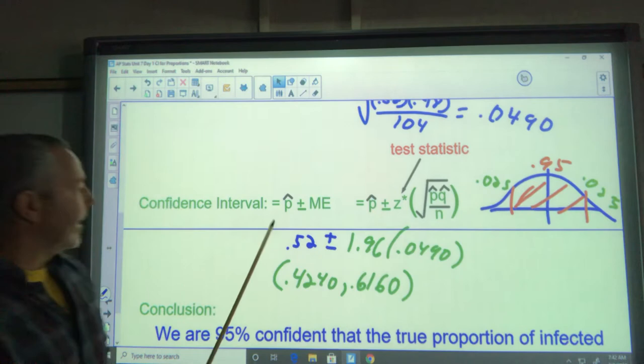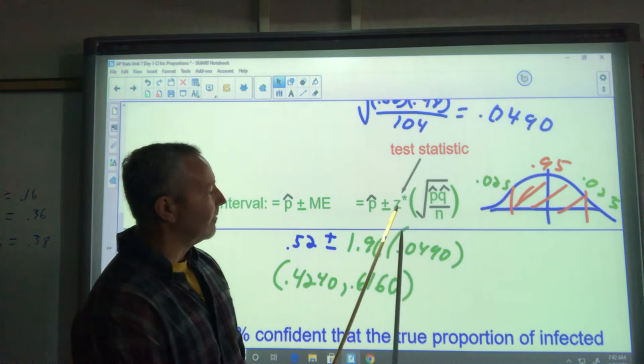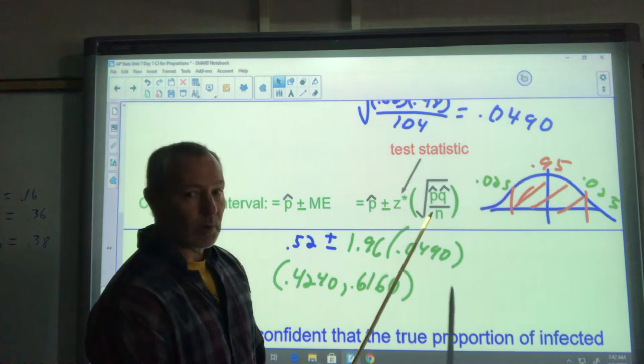We're going to come down and do our confidence interval. Again, it's P hat plus or minus the margin of error. P hat is 0.52 plus or minus our margin of error.